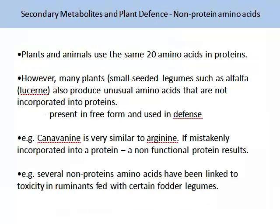Let us now talk about the non-protein amino acids. Plants and animals use the same 20 amino acids in proteins; however, many plants — particularly small-seeded legumes such as alfalfa or leucaena — also produce unusual amino acids that are not incorporated into proteins. They are present in the free form and used in defence. For example, canavanine is very similar to arginine. If mistakenly incorporated into a protein, a non-functional protein results. Several non-protein amino acids have been linked to toxicity in ruminants fed with certain fodder legumes.